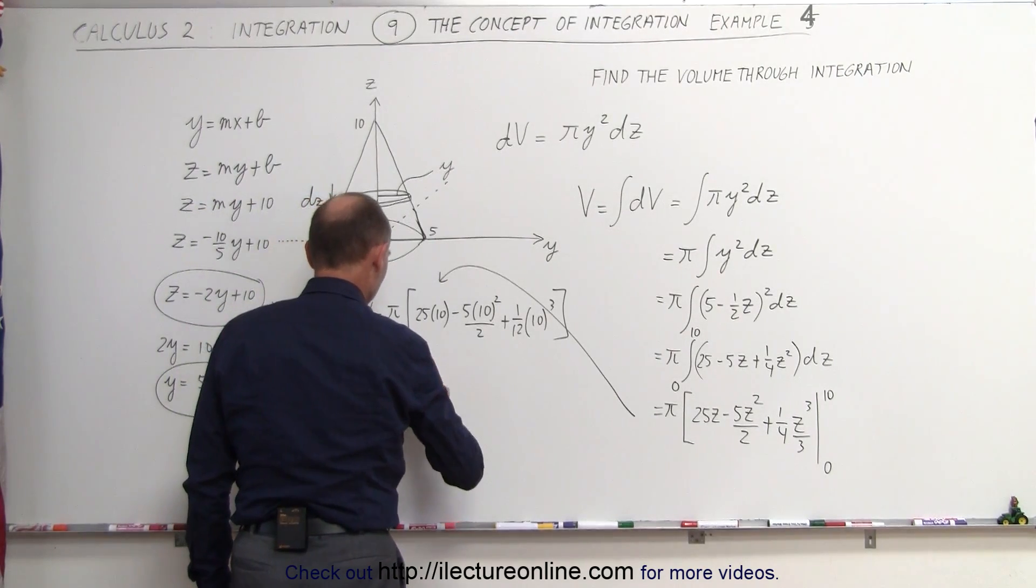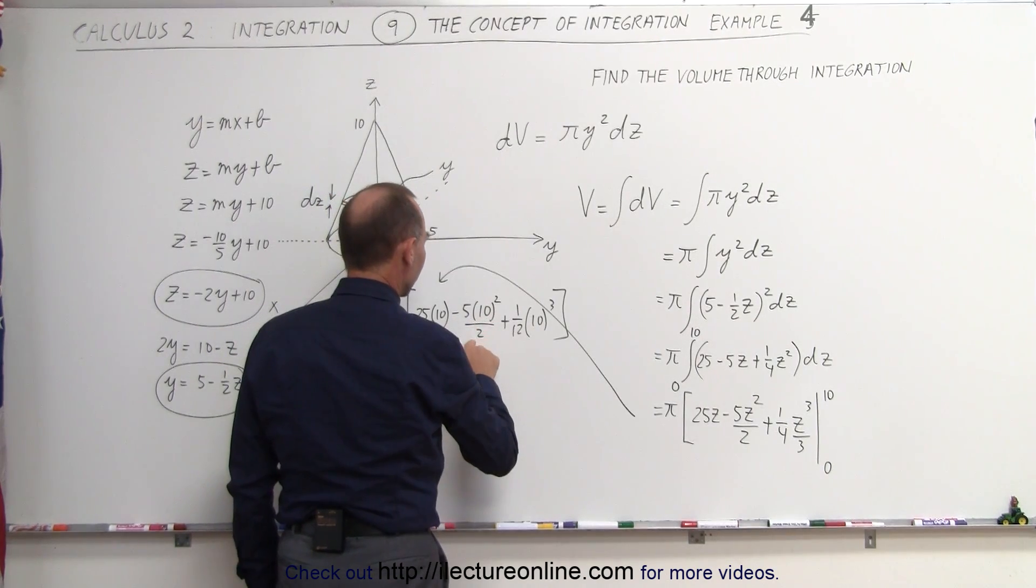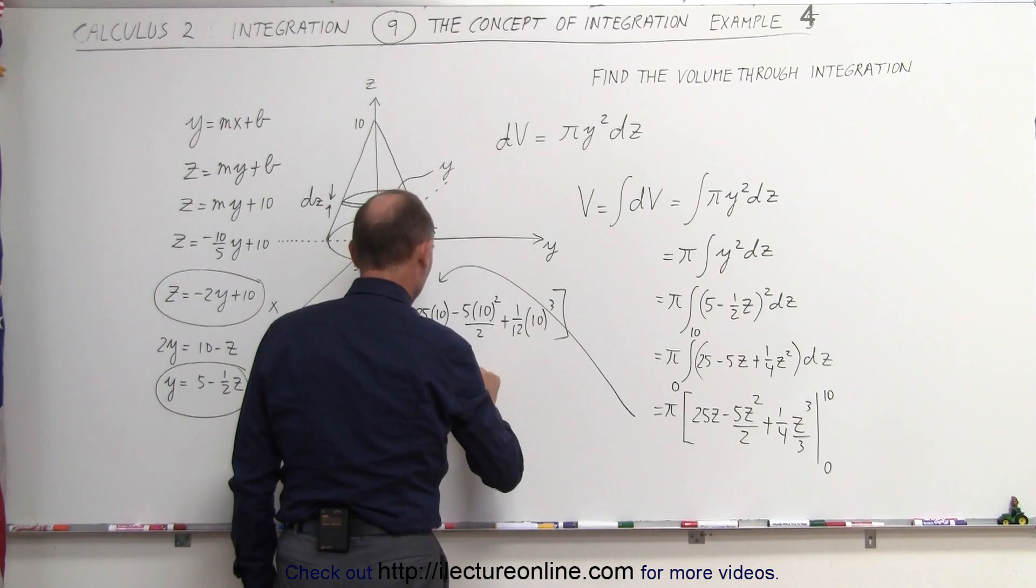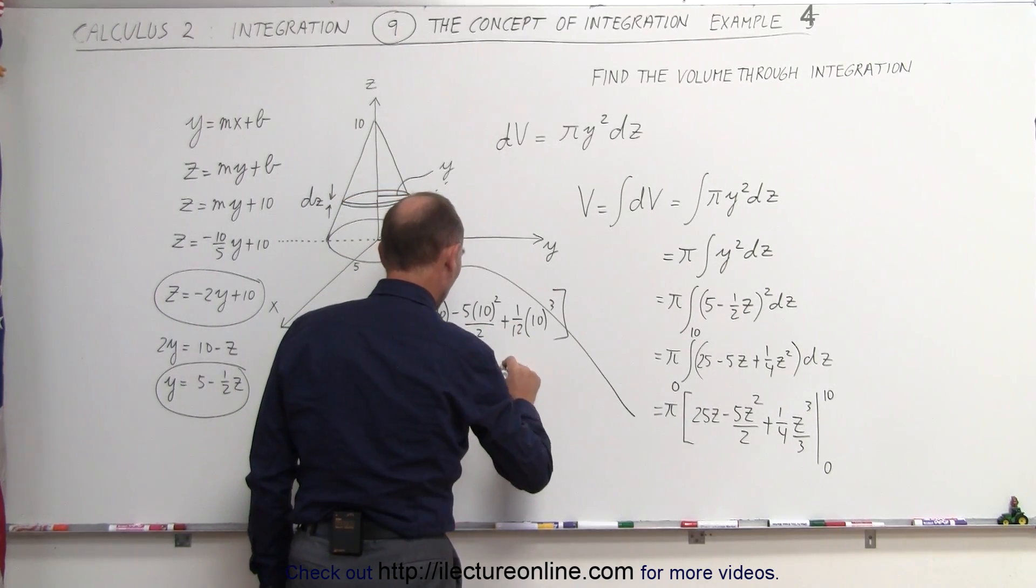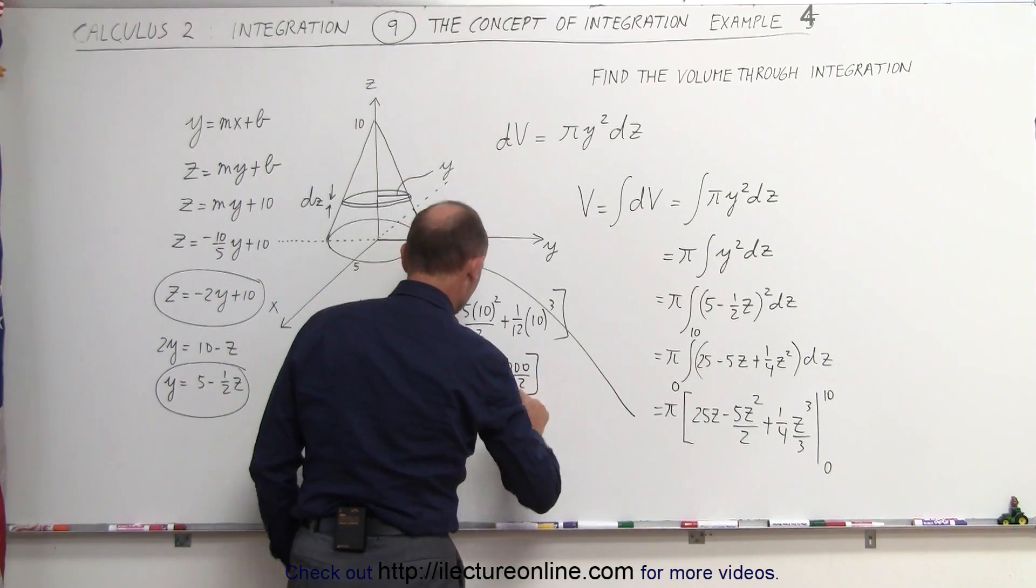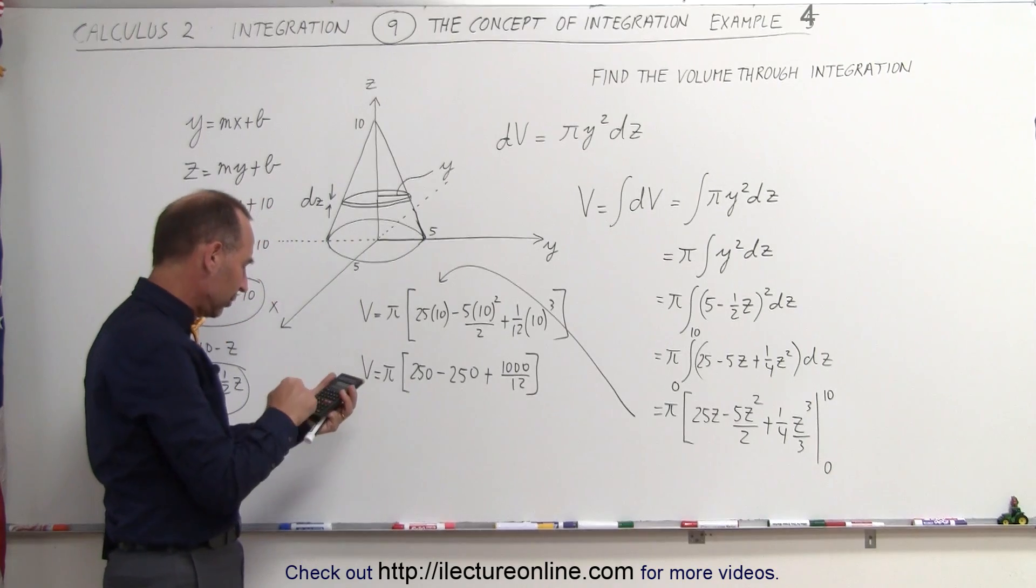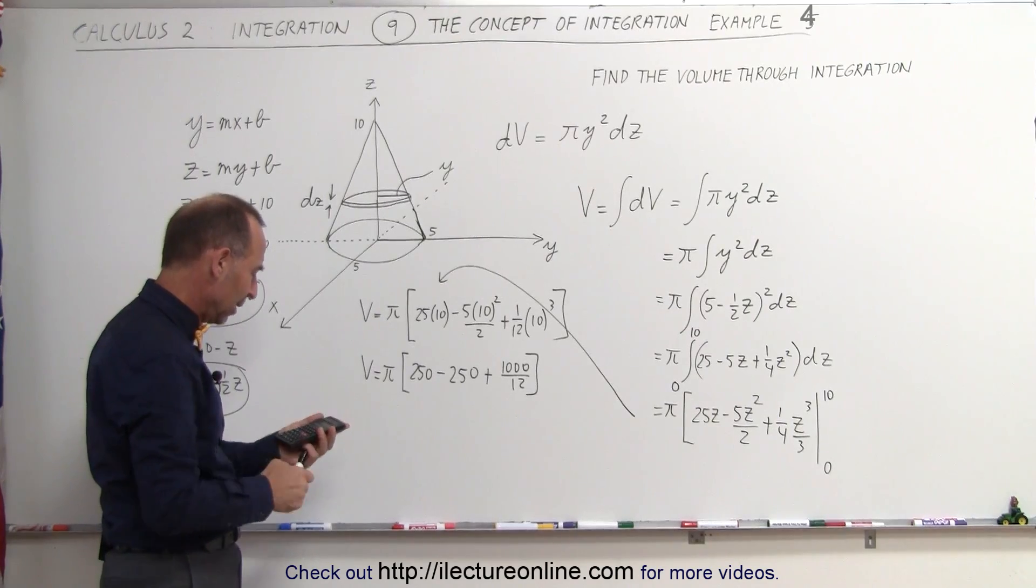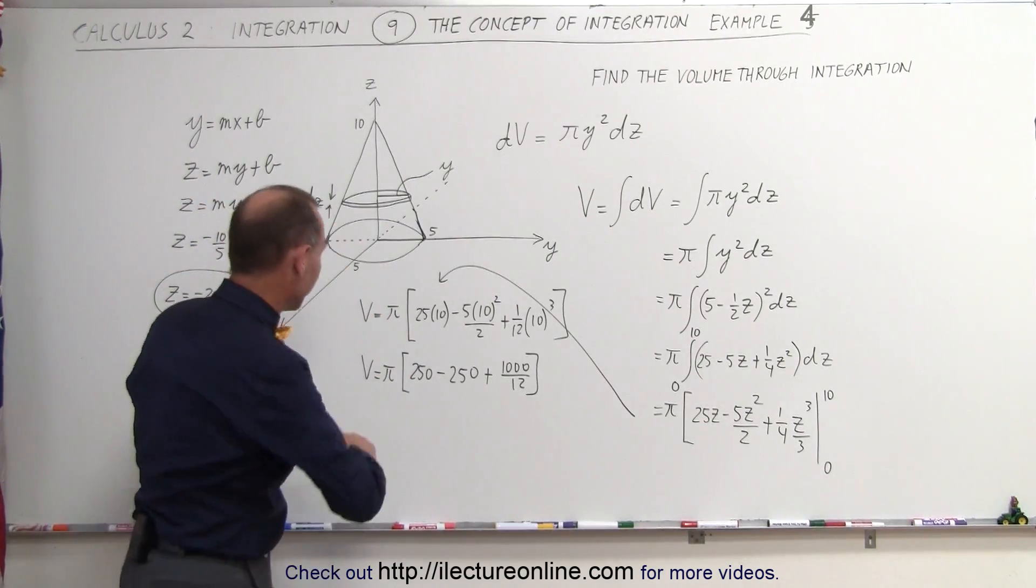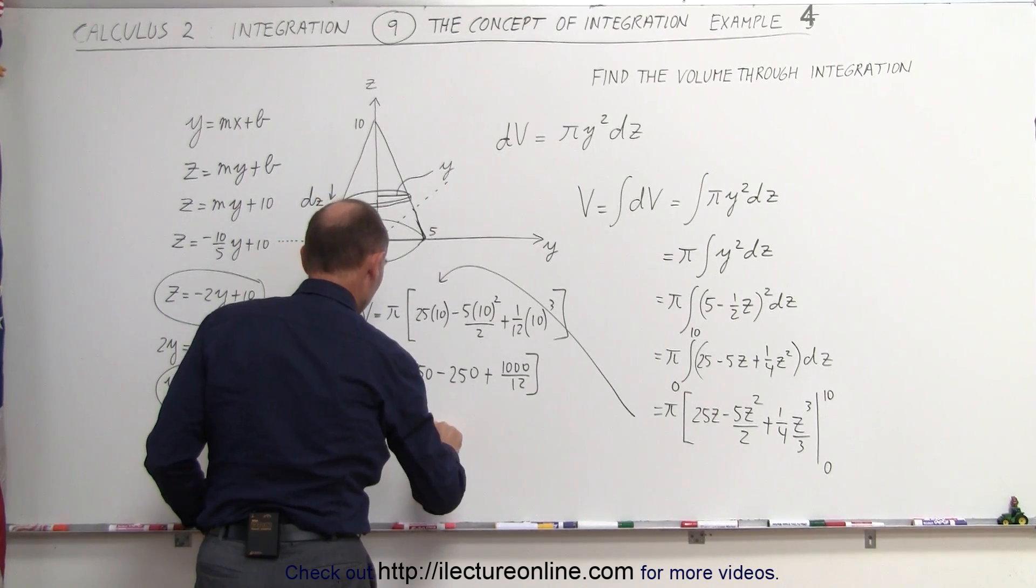Simplifying this just a little bit more. V is equal to π times 250, minus that would be 500 divided by 2, that would be minus 250. That's interesting, that cancels out. And finally we get plus 1,000 divided by 12, and then times π with the calculator. Let's find out what that's equal to. 1,000 divided by 12, and then times π equals, and we get 261.8.